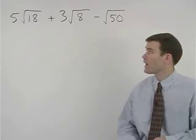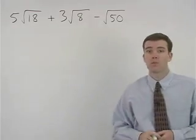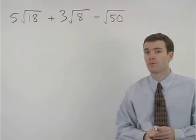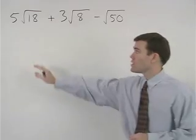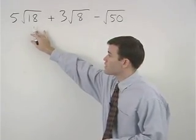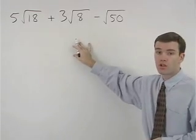In order to add these radical terms together, we must have what are called like radicands. In other words, the number inside the radical, which is called the radicand, must be the same for the different terms.